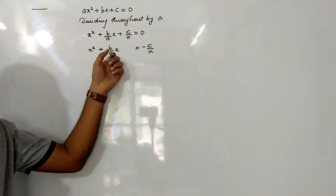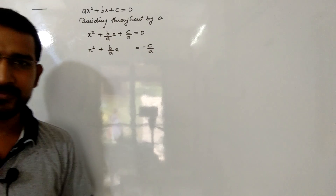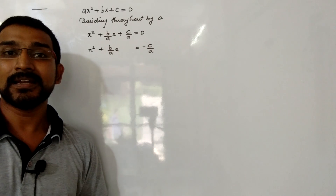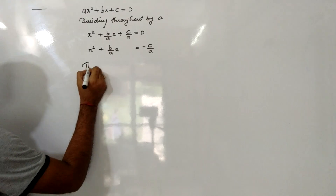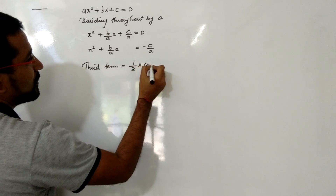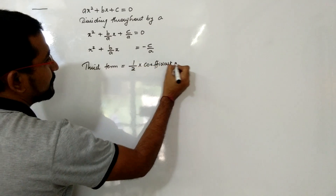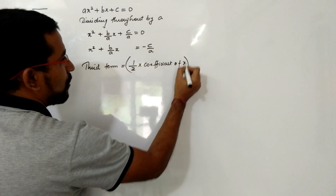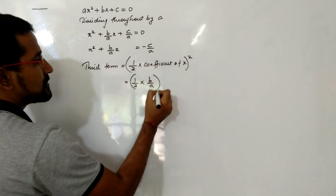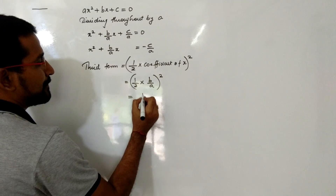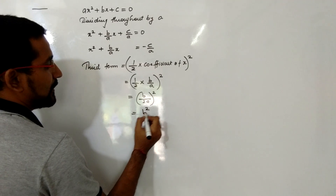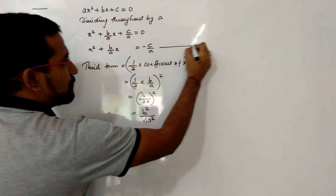We have the a² and 2ab form, but we don't have a b² value. So we will find the third term. The third term is equal to (half × coefficient of x)². The coefficient of x is b/a, so it will be (b/2a)², which equals b²/4a². This is equation number 1.